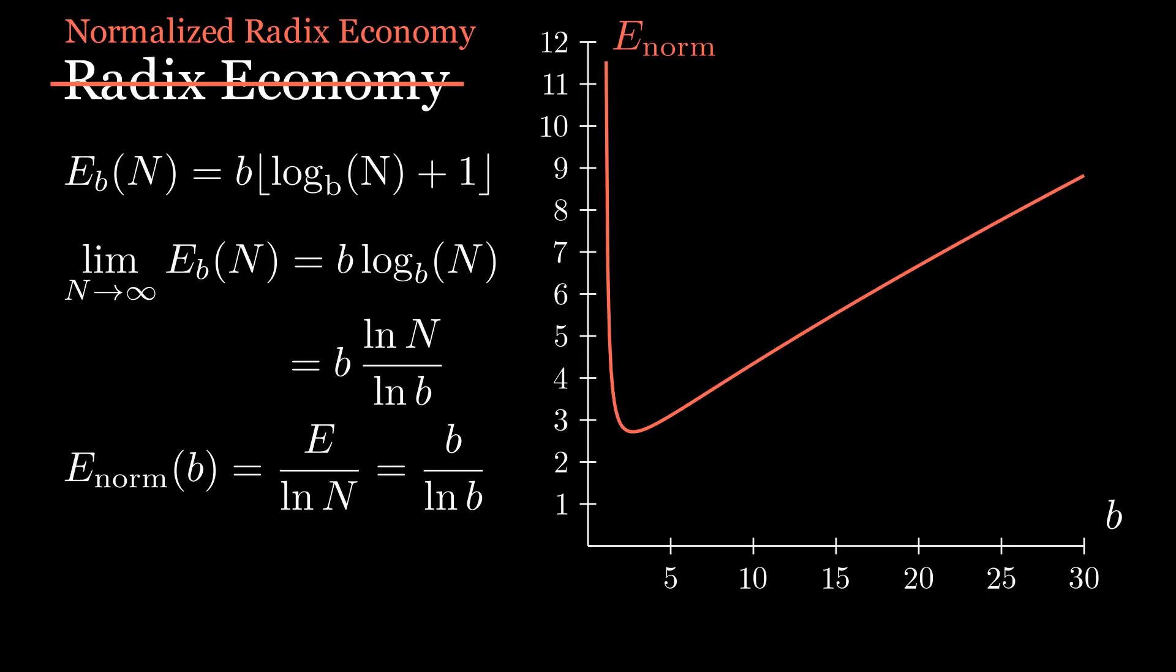The next obvious question is which base has the best radix economy? Well, I said smaller is better, and if we look at the graph of the normalized radix economy, we see that it has a minimum at b equals e. So the most efficient base is e, or approximately 2.718.